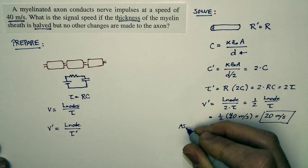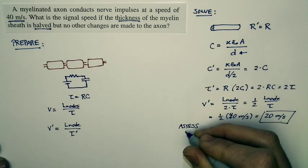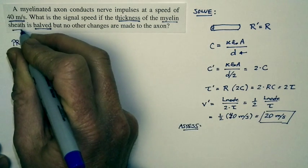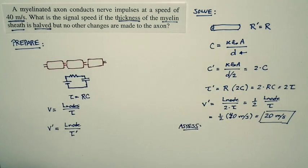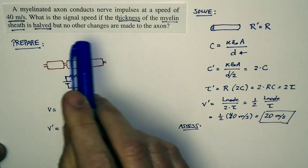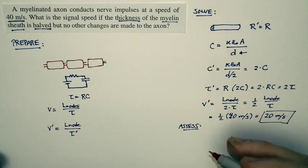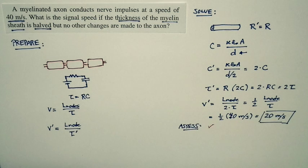Now let's assess this and see if it makes sense. The whole point for making a myelin sheath around an axon was to increase signal speed. And so if we reduce the thickness of the myelin sheath, we would expect it to reduce the signal speed. That's in fact exactly what we found. And so our answer matches our expectations of how the world works.